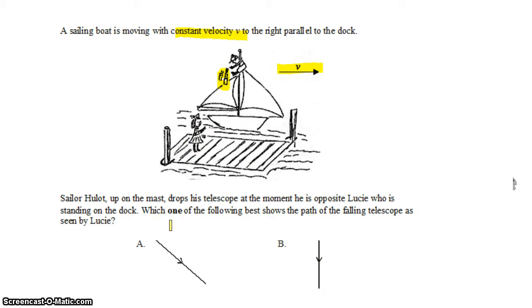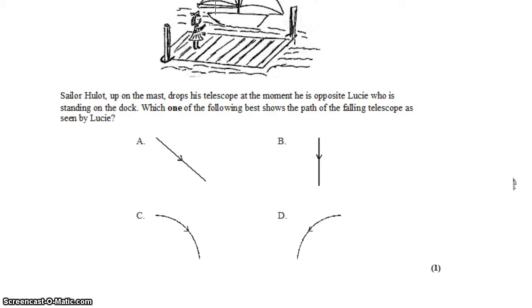Which one of the following diagrams best shows the path of the falling telescope as seen by Lucy.